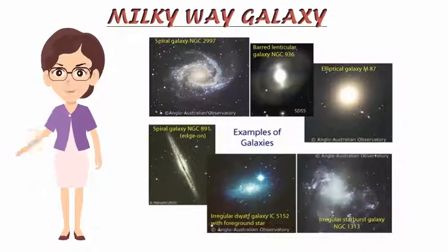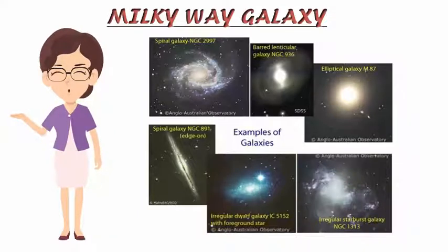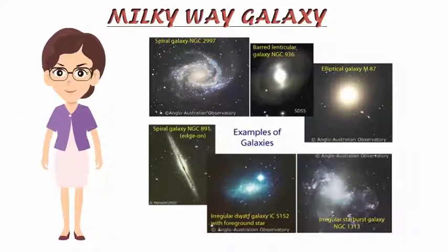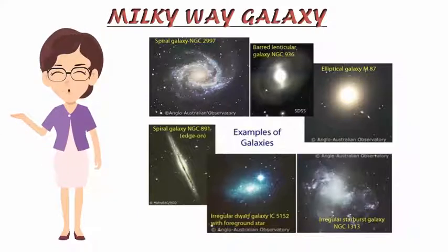There are many different kinds of galaxies including spiral, like our own Milky Way galaxy, elliptical, ring, dwarf, lenticular, and irregular.